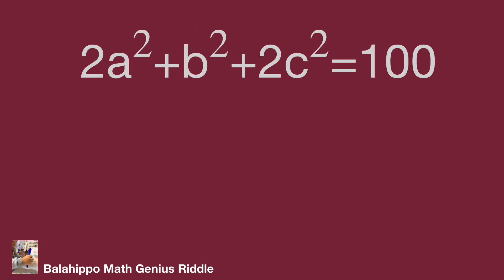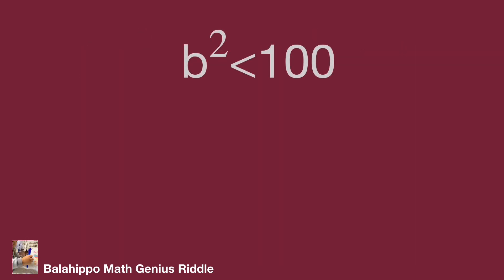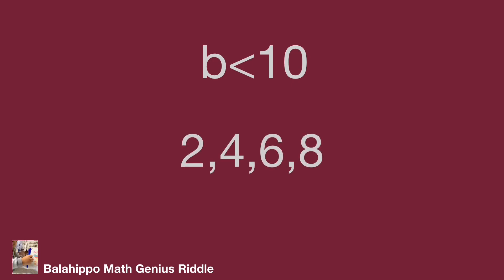Since 2a squared plus b squared plus 2c squared equals 100, b squared must be less than 100, which means b is less than 10. Because b is an even number, b could be equal to 2, 4, 6, or 8. We have narrowed down the value range.